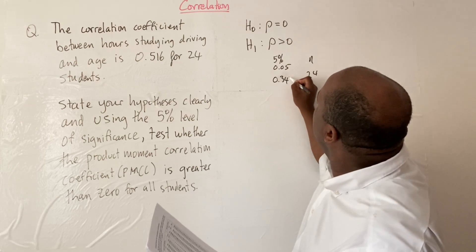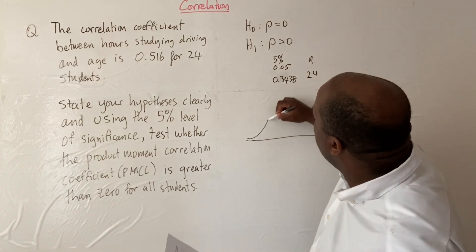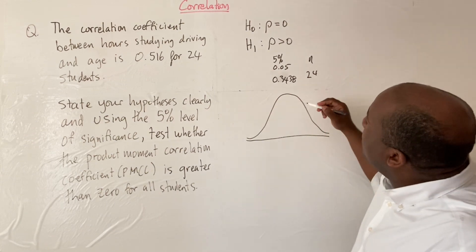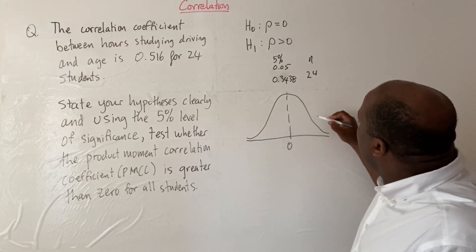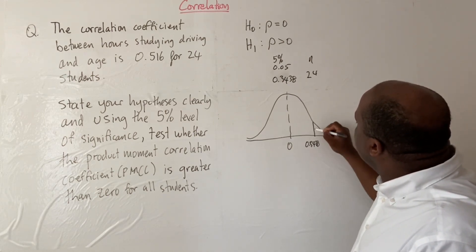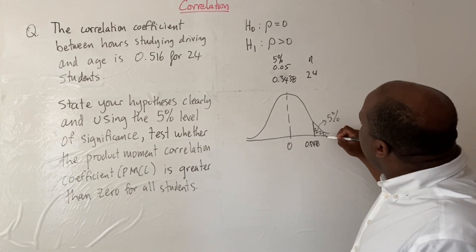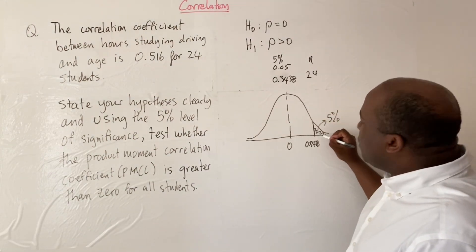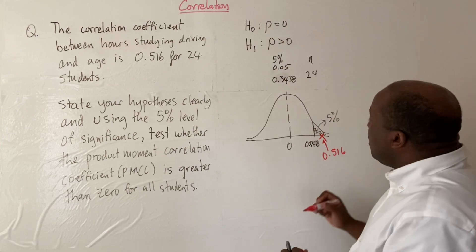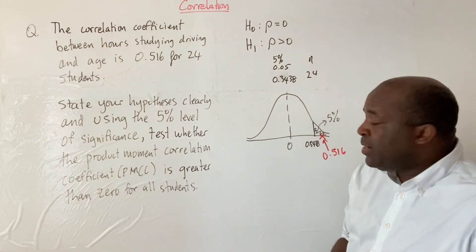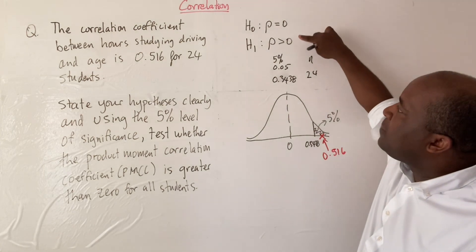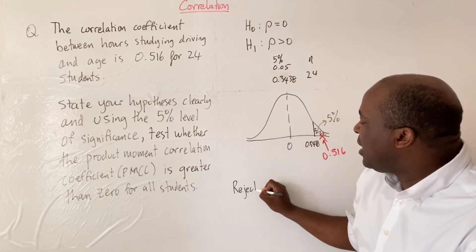We want to do a sketch — I'll use a normal distribution sketch just to anchor what we're doing to something familiar. With rho at 0 and the critical value of 0.3438 corresponding to the 5% significance level, we then place our sample value of 0.516. Since 0.516 is clearly beyond 0.3438, it falls in the critical region — the rejection region. So we reject H0 in favor of H1.